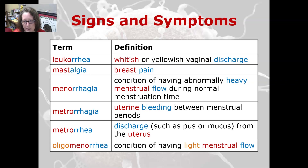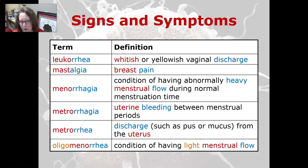Metrorrhagia is uterine bleeding between menstrual periods. Metrorrhea is a discharge such as pus or mucus from the uterus. Oligomenorrhea is a condition of having a light menstrual flow.